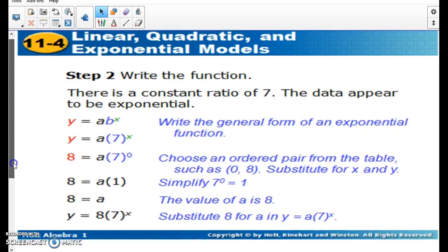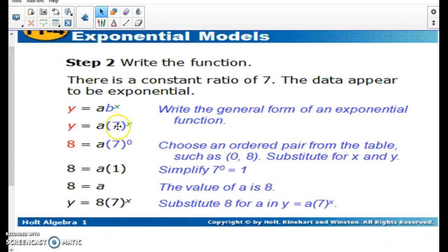So when we're trying to write the equation for it, we know seven is going to be that change there. And then we can pick any ordered pair from that table and plug it in for x and y. If we happen to plug it in for x and y, we will find out that it's going to equal 8.